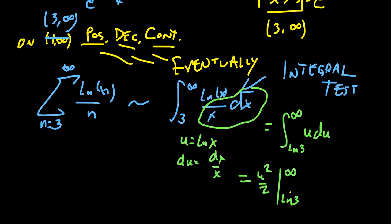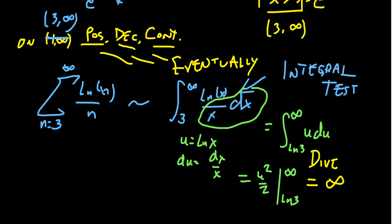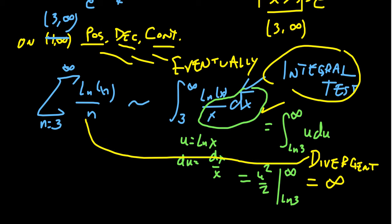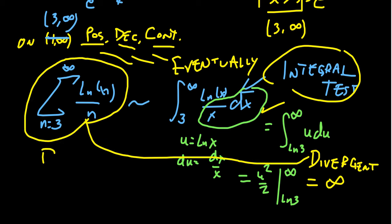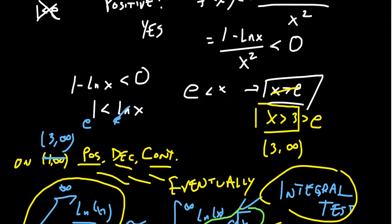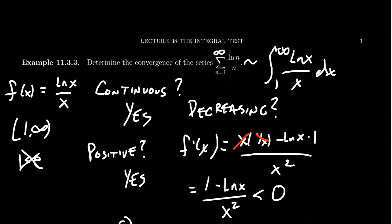Plugging in the finite lower bound is no problem. The issue is the upper limit: as we plug in infinity, we get infinity squared, and everything becomes infinite. So this improper integral diverges. By the integral test, this implies that the series is likewise divergent. Since the series diverges starting at n equals 3, it also diverges starting at n equals 1. Therefore, the original series from n equals 1 to infinity of ln(n)/n is divergent by the integral test.